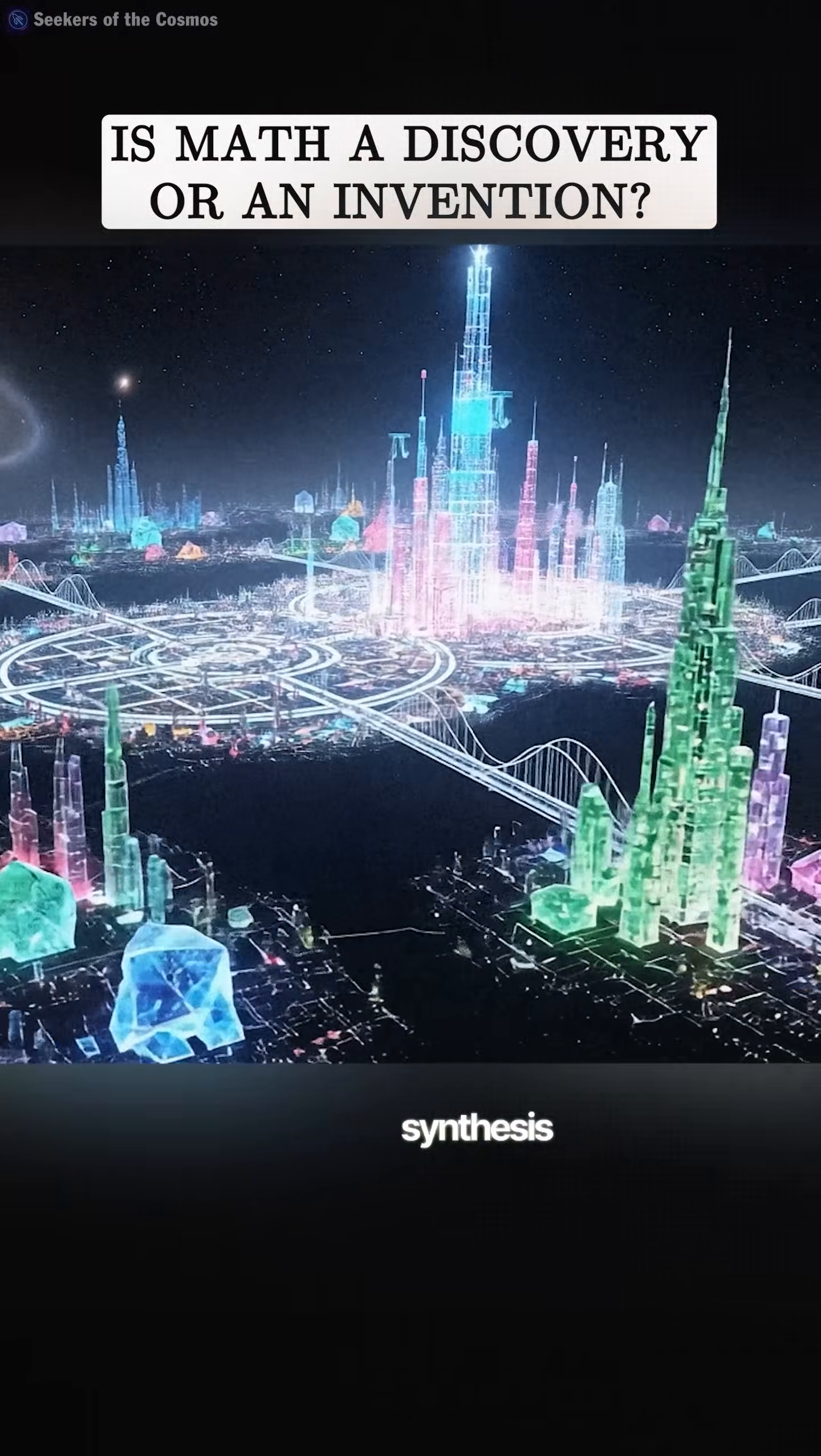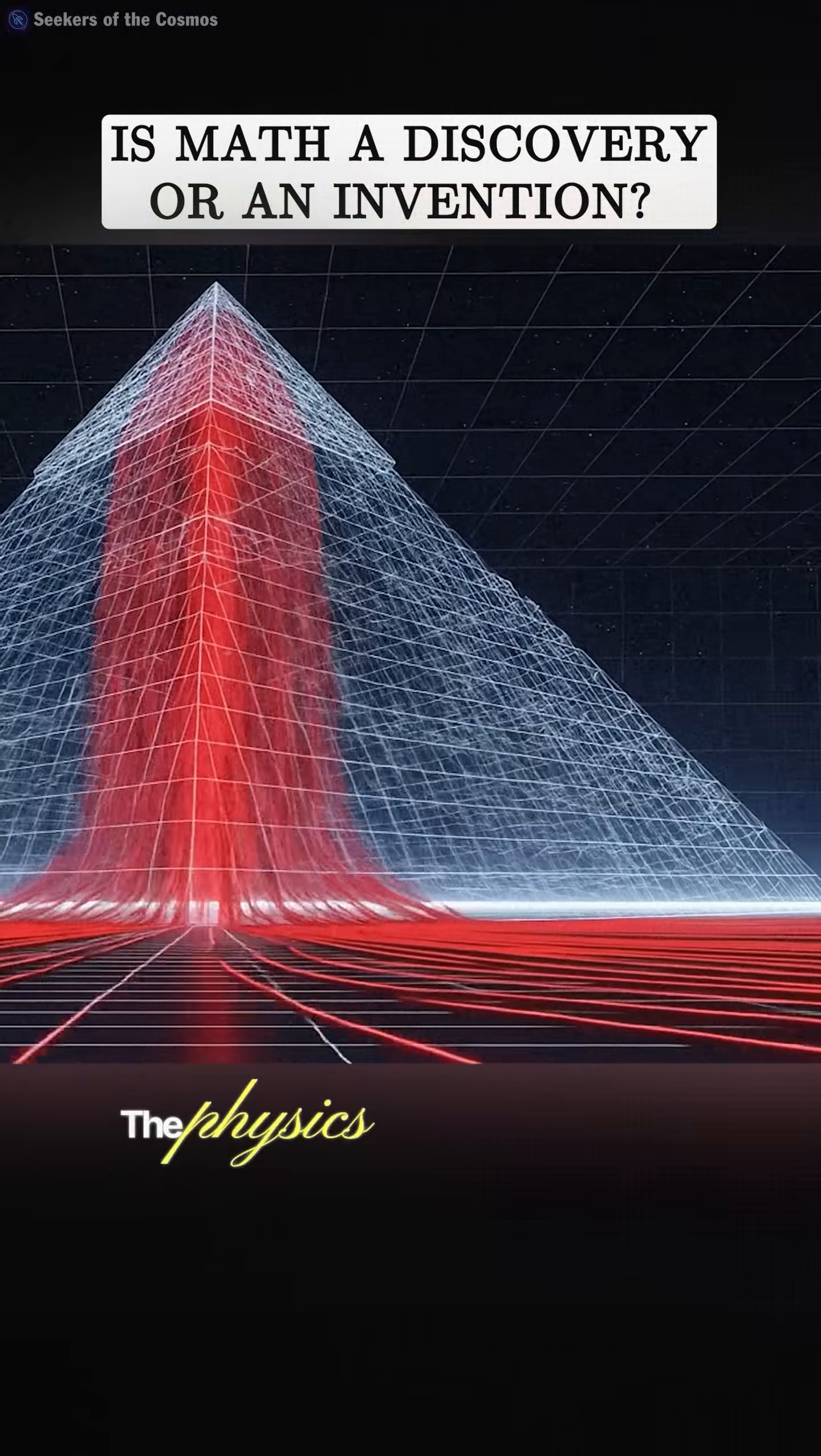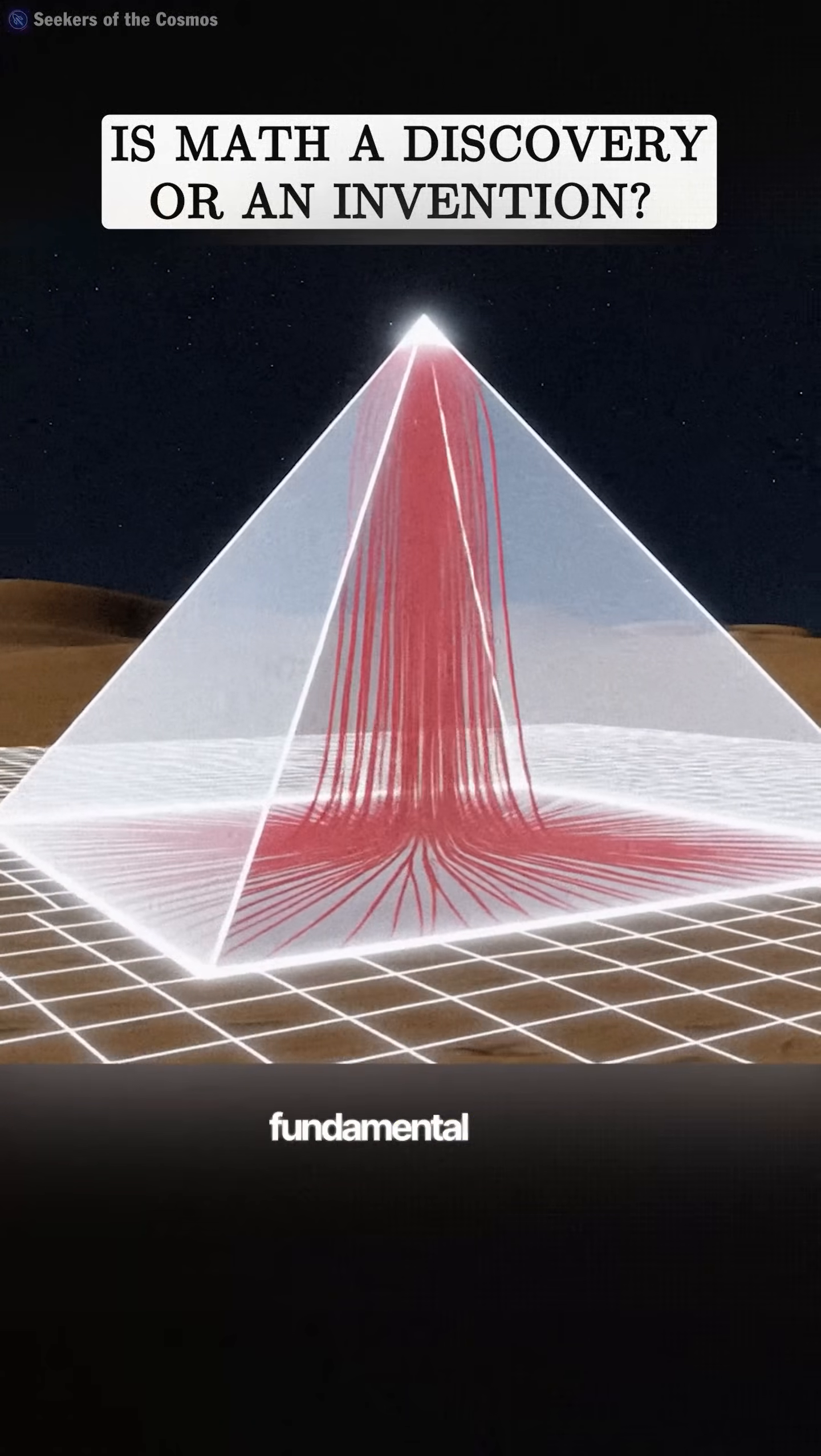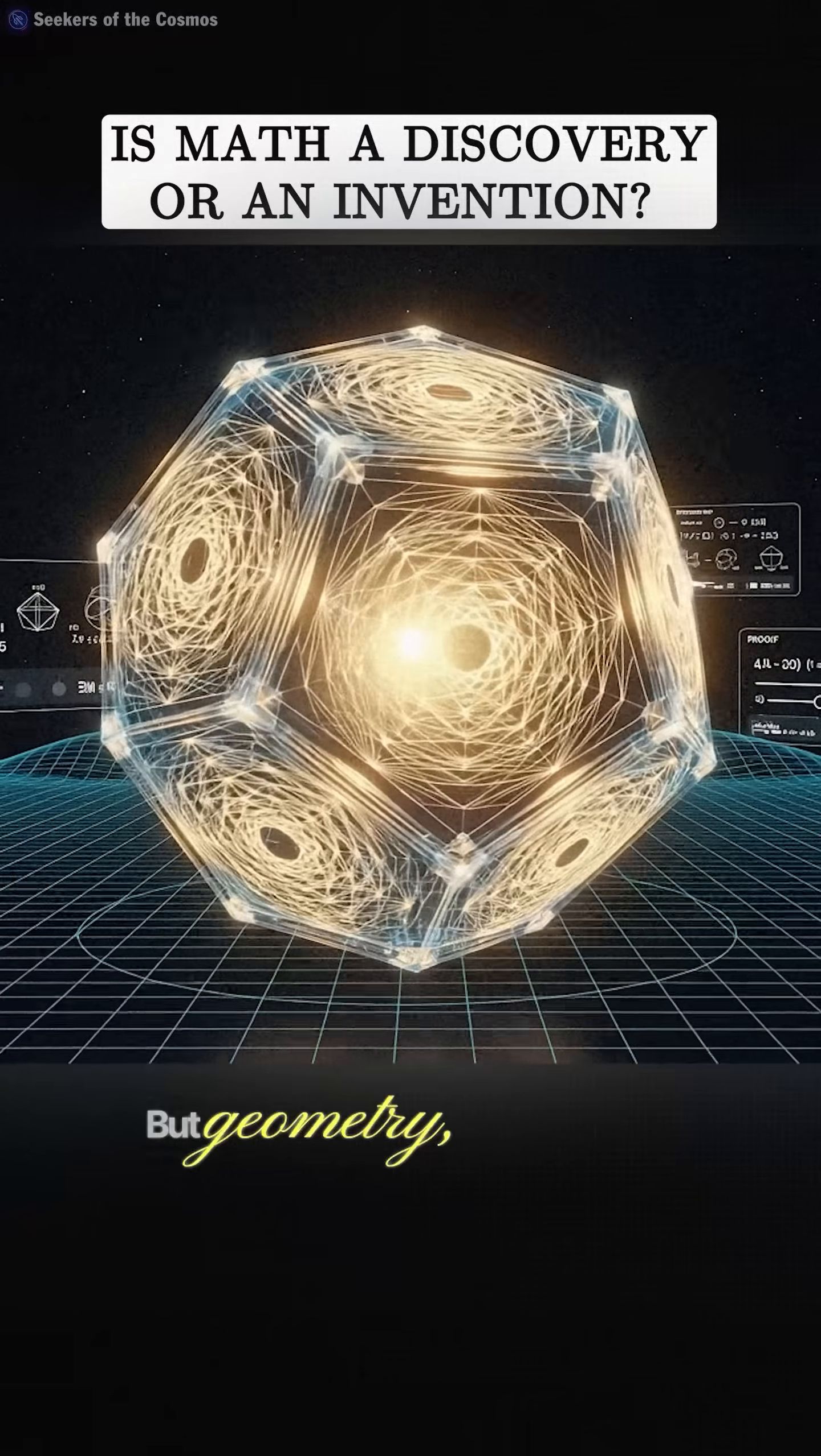So here's the synthesis that I think makes the most sense. The physics that allows a pyramid to be stable has always existed. Those are the discovered, fundamental rules of the universe.